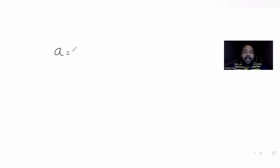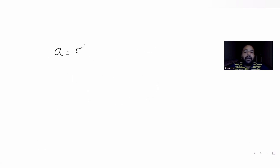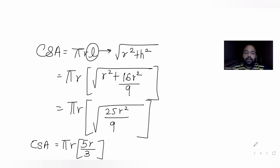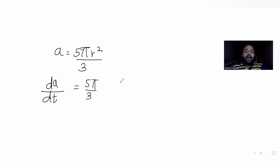Simplifying √(25r²/9) gives 5r/3. So the curved surface area A equals πr times (5r/3), which gives (5/3)πr². Now I need to find the change in this area with respect to time.